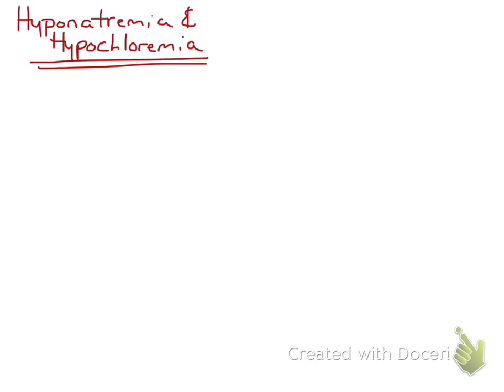There are two main causes of hyponatremia and hypochloremia, and they are either moving it or losing it. So you're either moving sodium and chloride, or you're losing sodium and chloride from the body. First I'll talk about moving it, and then I'll go on to losing it later in the video.